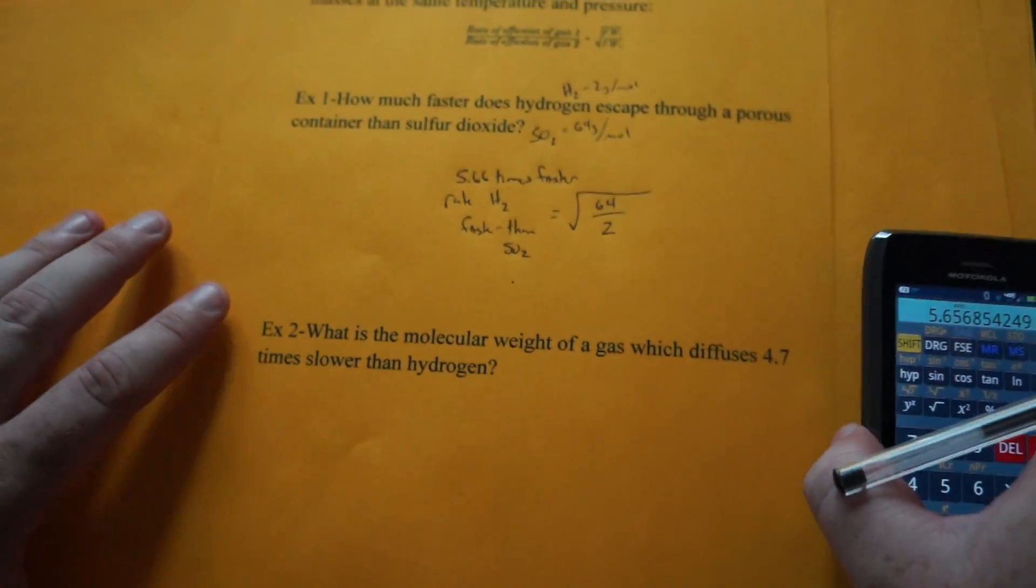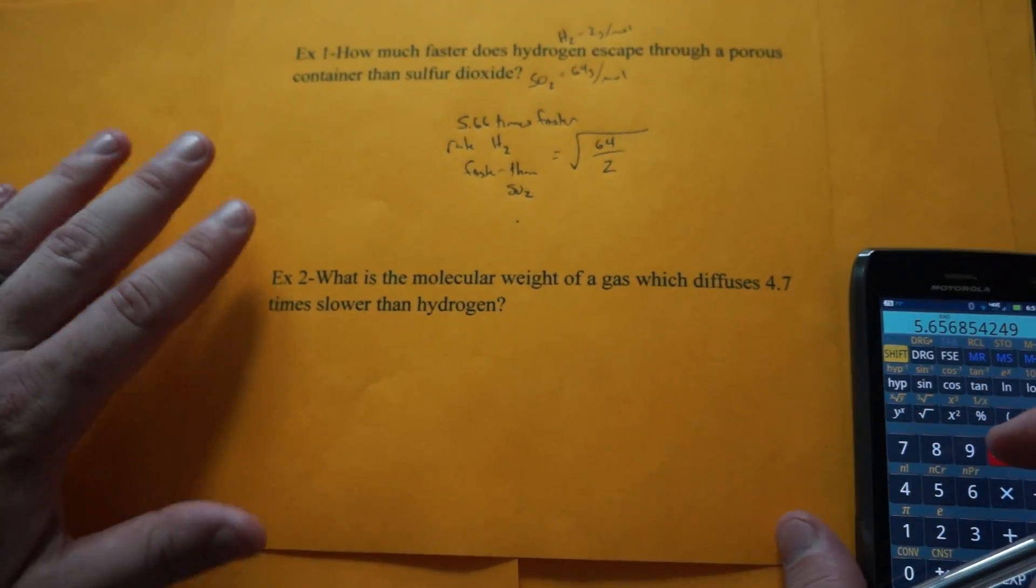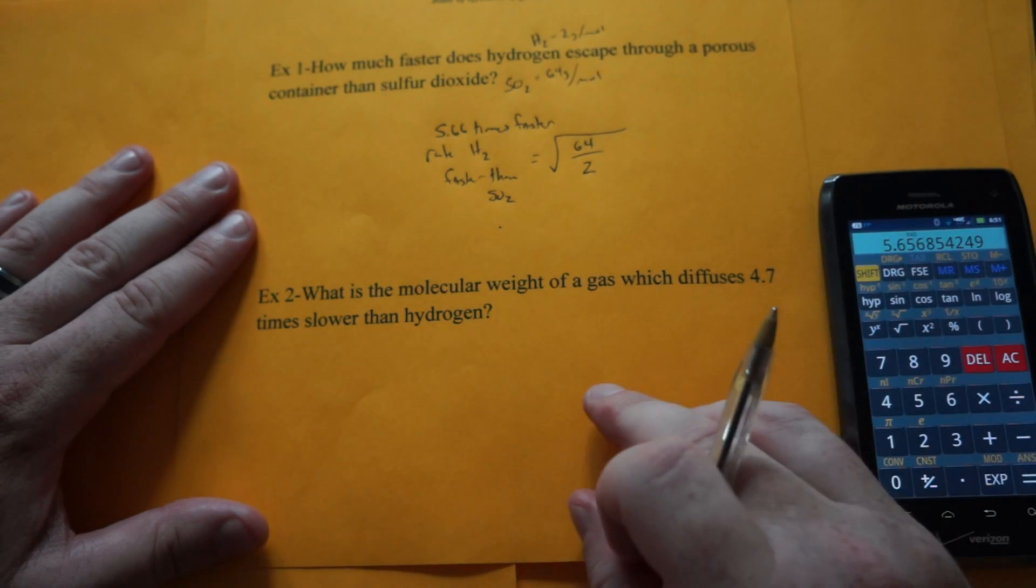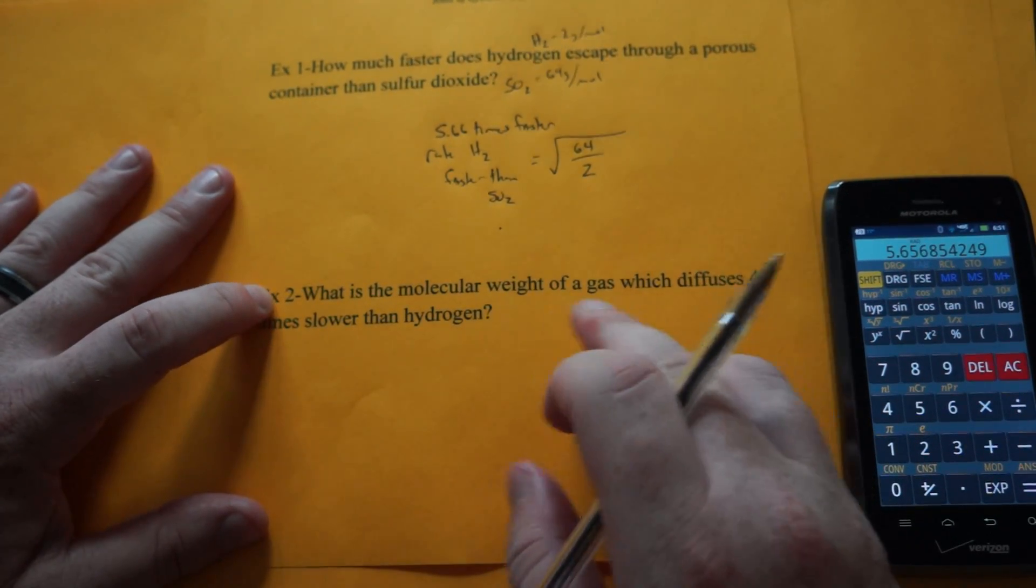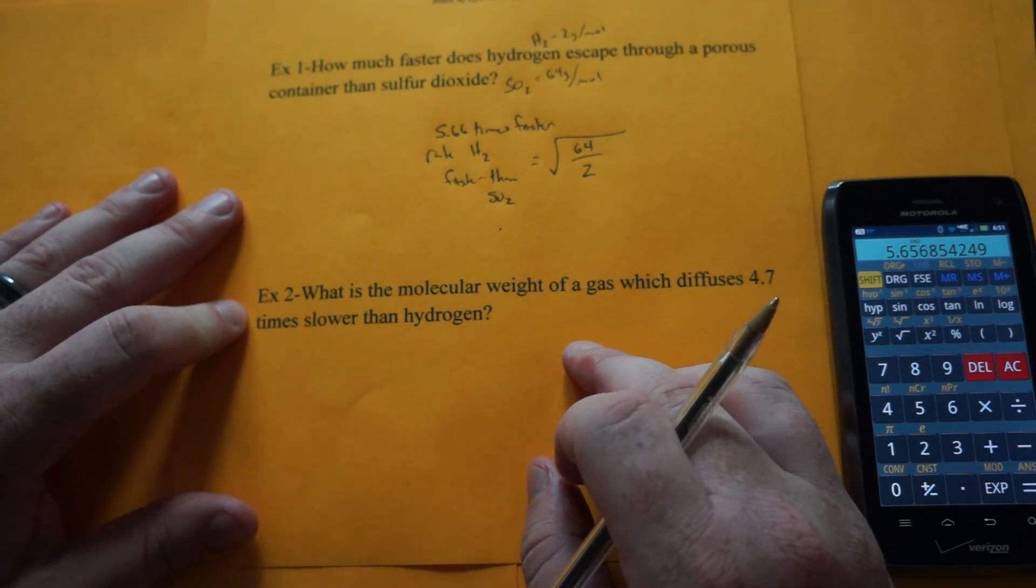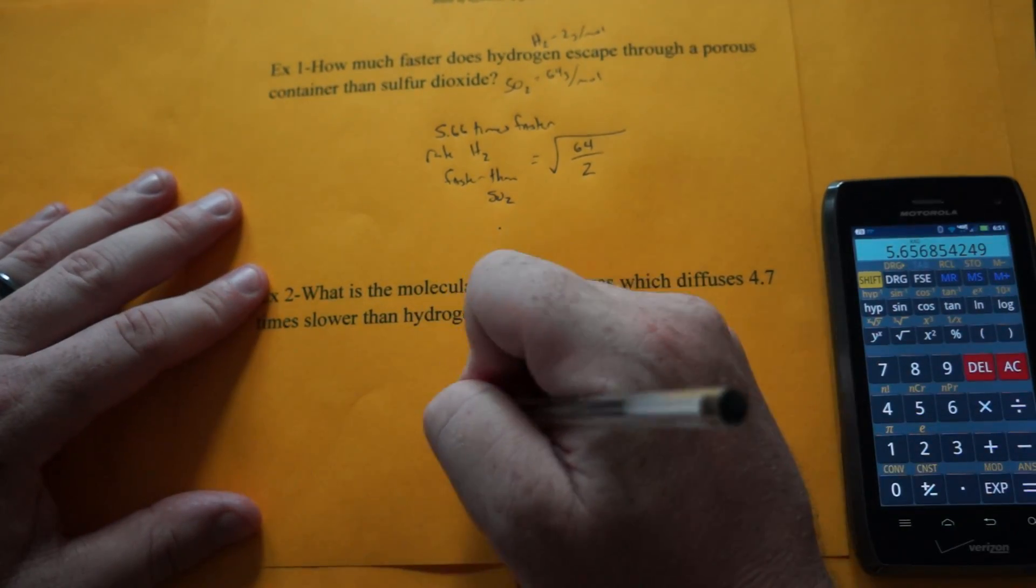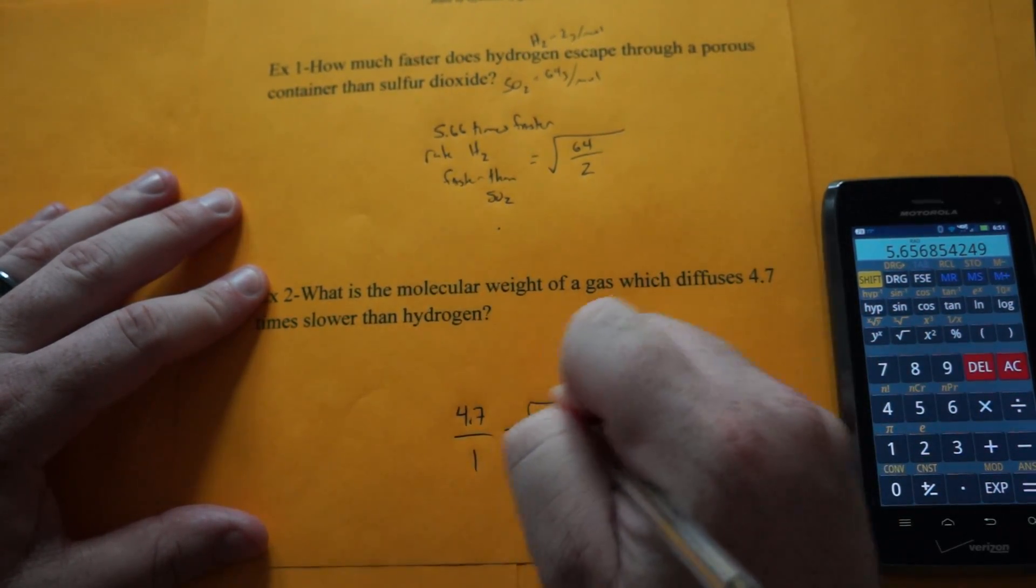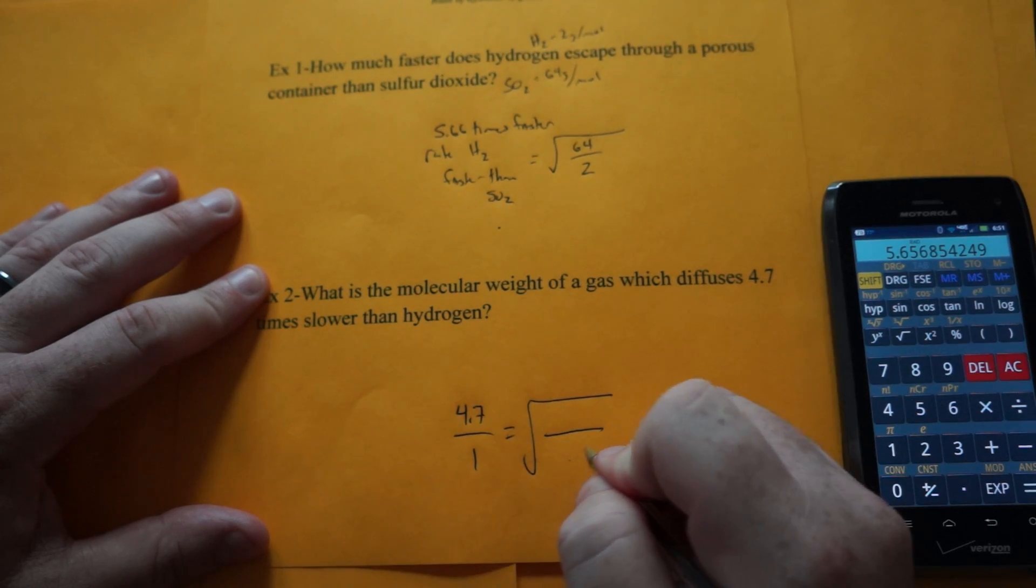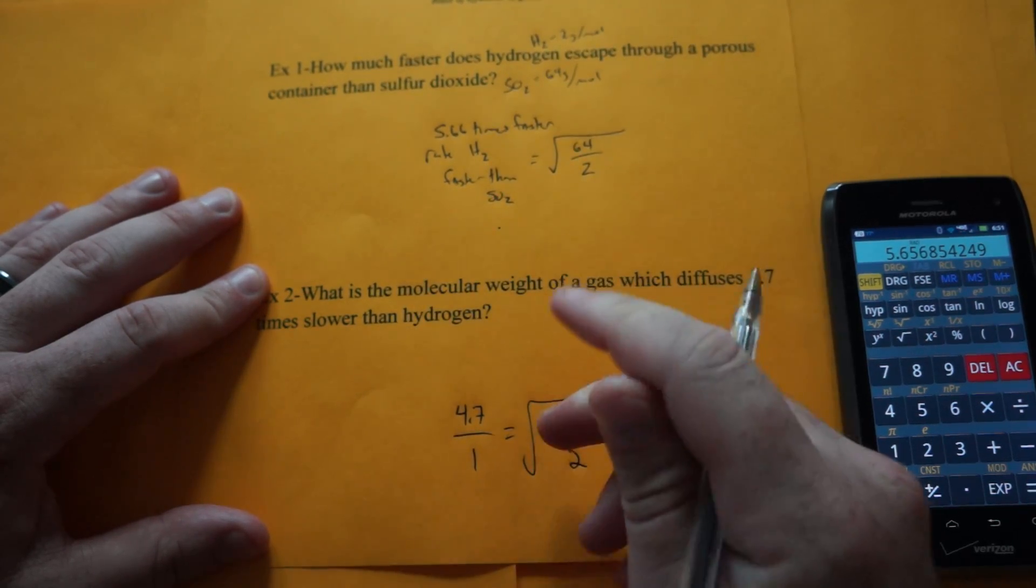Now our next one, what is the molecular weight of a gas which diffuses 4.7 times slower than hydrogen? So this one's kind of tricky to read. So hydrogen actually escapes 4.7 times faster. So we'll put the 4.7 over 1 is equal to the square root of hydrogen's weight goes on the bottom, that's 2, and we'll put x here.